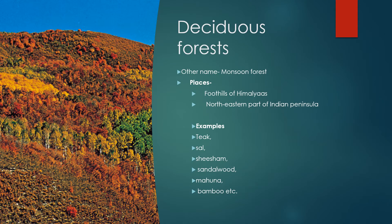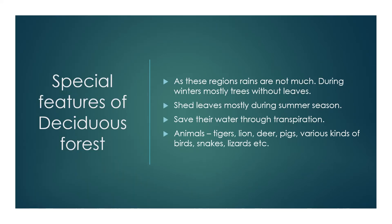Now we see the special features of the deciduous forest. The regions — the interior part of the Indian Peninsula and the foothills of the Himalayas — are not having much rain. So the growth of trees is not like the trees of the evergreen forest. They shed their leaves all at one time, so we cannot say the trees remain green every time. During the end of summer and winters, mostly the trees are without leaves so that they can survive the harsh cold climate.